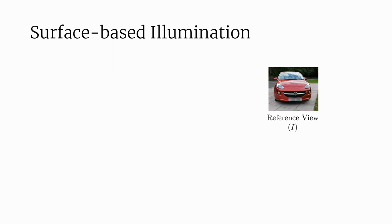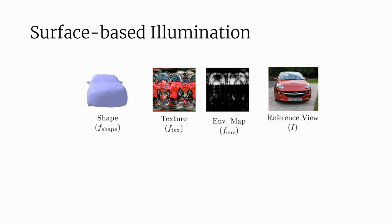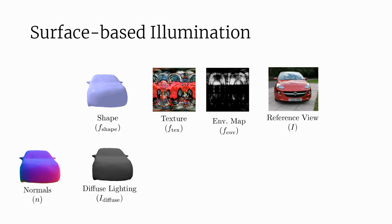Here we visualize this decomposition. The 3D shape, unwrapped texture map, and unwrapped environment map are all neural functions of spherical coordinates. Here, the generated environment map shows light coming primarily from above. We can use the predicted shape to recover surface normals. The surface normals and environment map allow us to recover the diffuse lighting, which encodes for the view-independent component of the illumination.